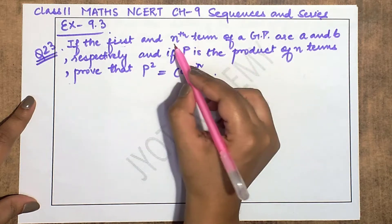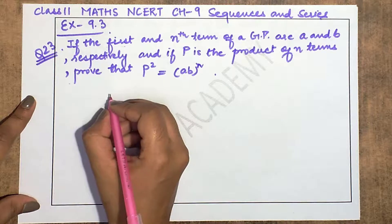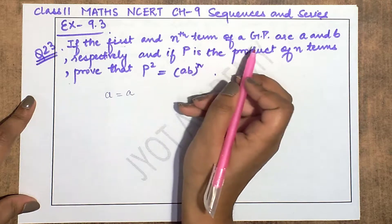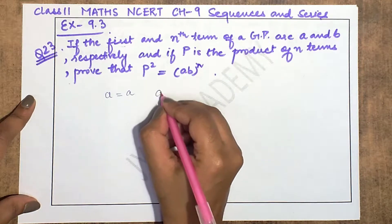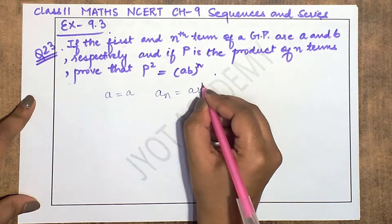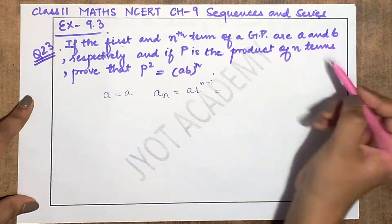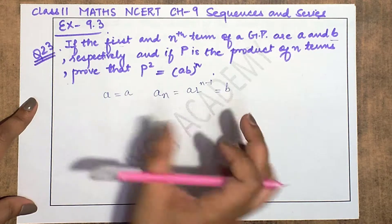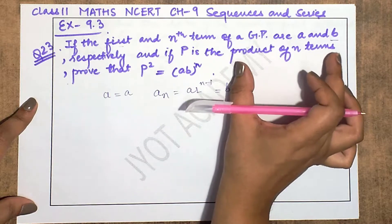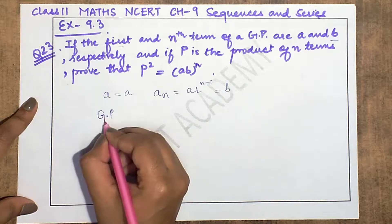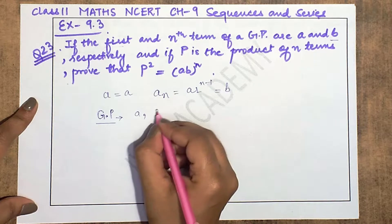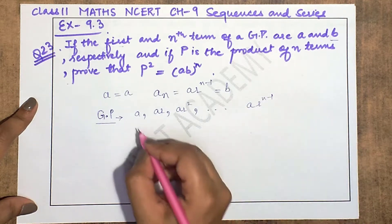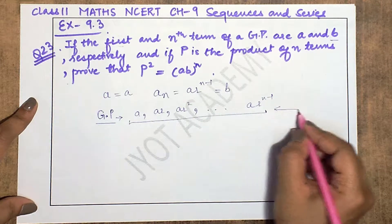What is given here: the first term of the geometric progression is a, as given. The nth term of a geometric progression is a_n = ar^(n-1), whose value is given as b. And p is given as the product of n terms. In a geometric progression, n terms are: a, ar, ar², up to ar^(n-1).